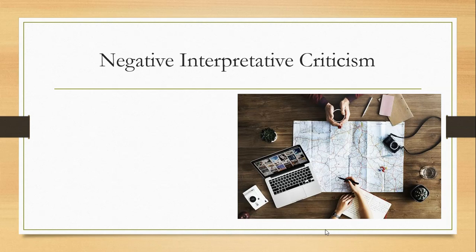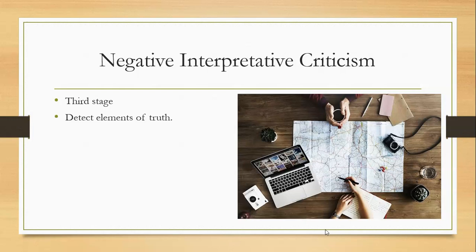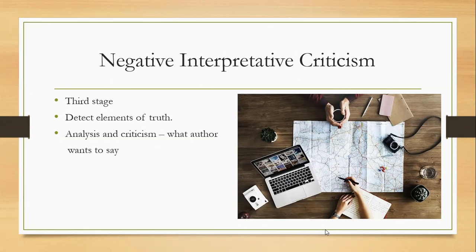In the last slide, you learned about positive interpretative criticism, which is a part of internal criticism. We saw the real meaning and the literal meaning of a document — in other words, what the author was trying to say. Today's negative interpretative criticism is actually the third stage of analytical operations. It is to figure out the elements of truth in a document, just like positive interpretative criticism.